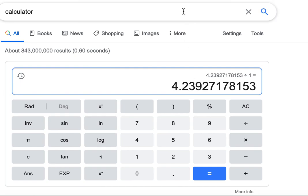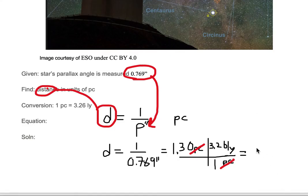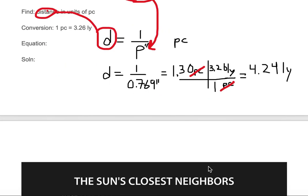So our answer is 4.24, and our unit is light years because we just carry the letters across like we did with the numbers. We canceled out parsec. The only thing left is light year, so our answer is light year. So now we have a distance of 4.24 light years for Proxima Centauri.